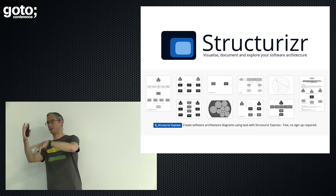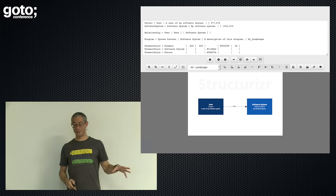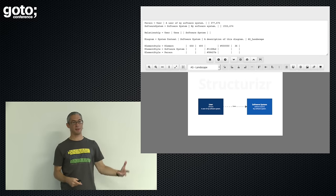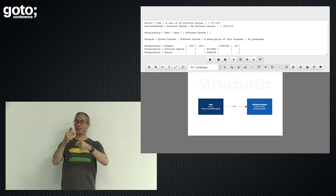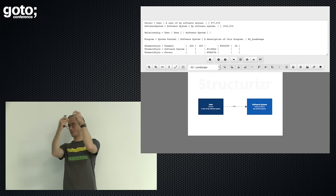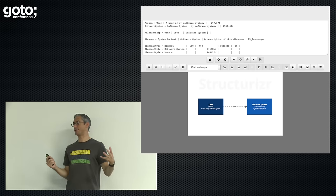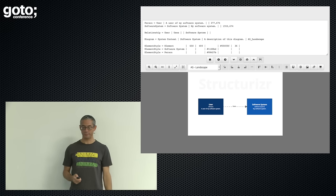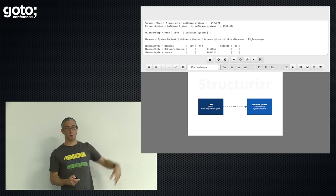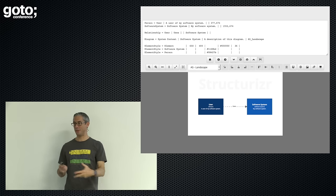Structurizer is partly a SaaS product, partly open source. In its very simplest form, you can write a simple domain-specific language to create some diagrams — it's really just an implementation of the people, software systems, containers, and components thing I briefly showed you. It's like web sequence diagrams if you've seen that. This is great for sketching up something small and simple, a single diagram at a time, but it's not really where we want to go.